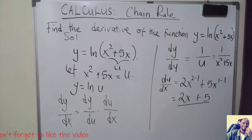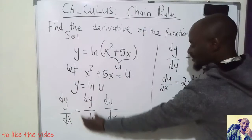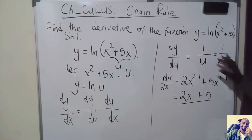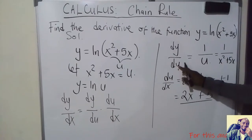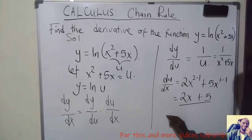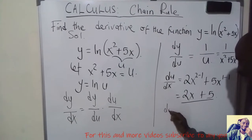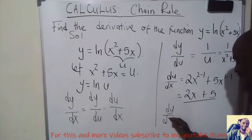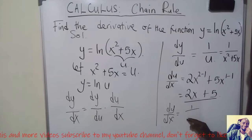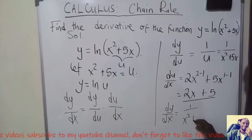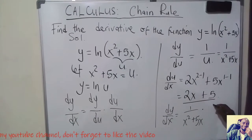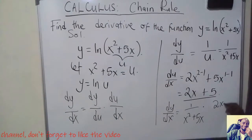Now following the Chain Rule formula, we multiply dy/du by du/dx. So dy/dx = 1/(x² + 5x) multiplied by (2x + 5).